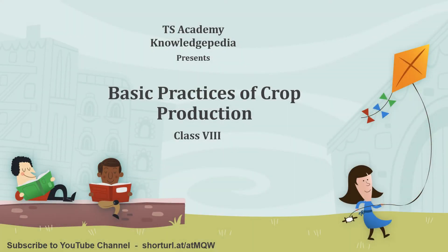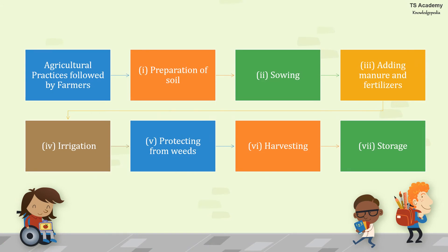In this session of TS Academy, we'll discuss basic practices of crop production for class 8. The basic steps followed by farmers for agricultural practices are: preparation of soil, sowing, adding manure and fertilizer, irrigation, protecting from weeds, harvesting, and storage.